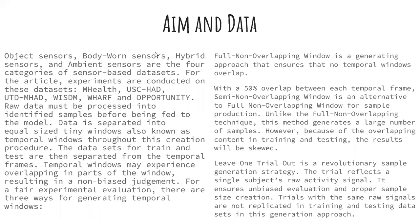Object sensors, body-worn sensors, and hybrid sensors are the main categories of sensor-based datasets in the article. Experiments are conducted on datasets including M-Health, USC-CHD, UTD-MH, AD, Wisdom, WAF, and Opportunity. Raw data must be processed into identifiable samples before being fed into the model. Data is separated into equal-size temporal windows, then separated into train and test sets, with overlapping windows resulting in a non-biased judgment.